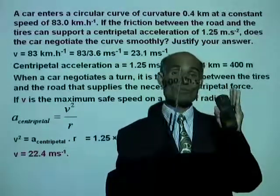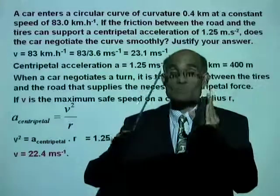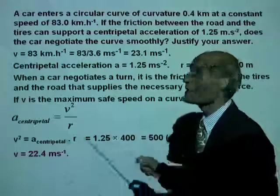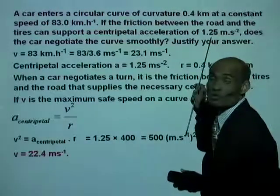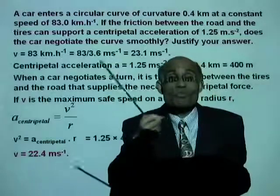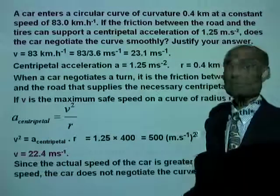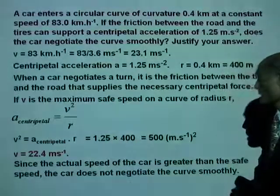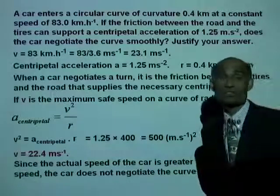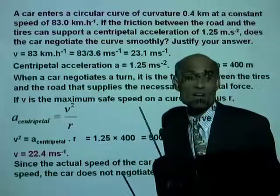Every time you see a curve, there is a speed limit. You are not allowed to go above that speed — it is the maximum safe speed for that curve. If you exceed that speed, you are asking for a greater centripetal acceleration than friction can provide, and you will not get the centripetal force to keep you in that circular track. Since the actual speed is greater than the safe speed, the car does not negotiate the curve smoothly.